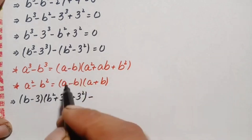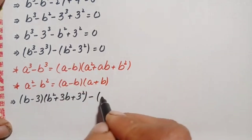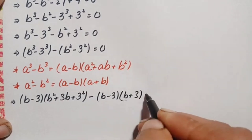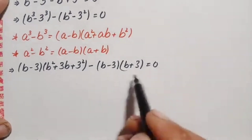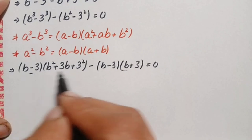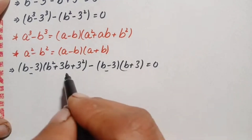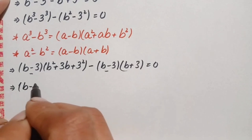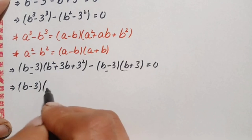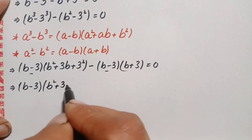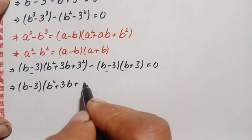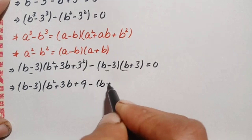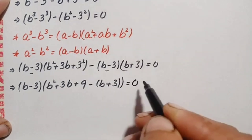Applying the difference of squares identity gives minus (b minus 3)(b plus 3), so the full expression becomes: (b minus 3)(b squared plus 3b plus 9) minus (b minus 3)(b plus 3) equals 0.